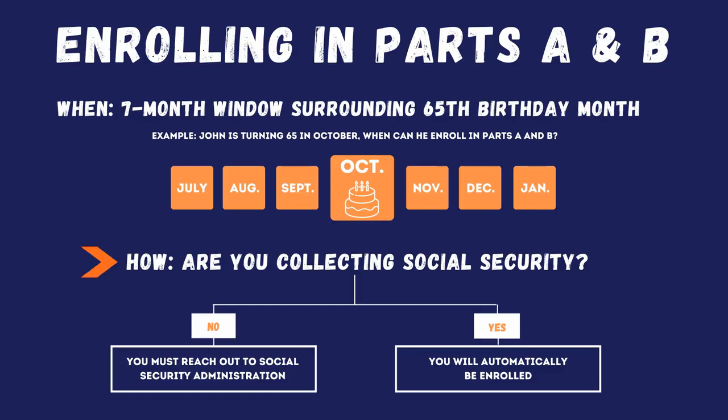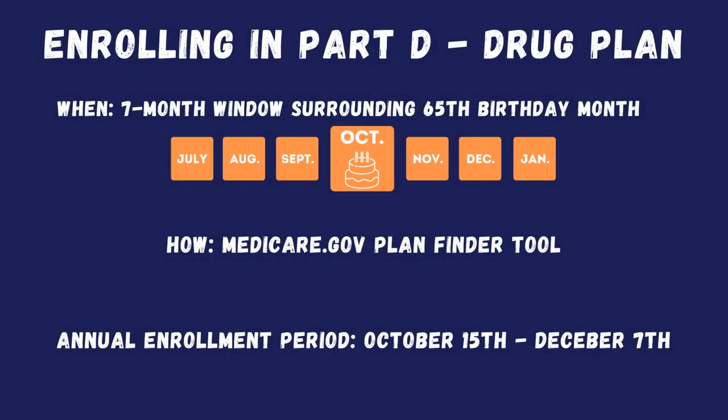So how do you enroll in Medicare? It comes down to one question: are you collecting Social Security? If you are not, you must reach out to the Social Security Administration to enroll — by phone or online. If you are collecting Social Security, you'll be automatically enrolled. John is collecting Social Security, so he'll receive his red, white, and blue Medicare card a couple months before October, showing Part A effective 10-1 and Part B effective 10-1.